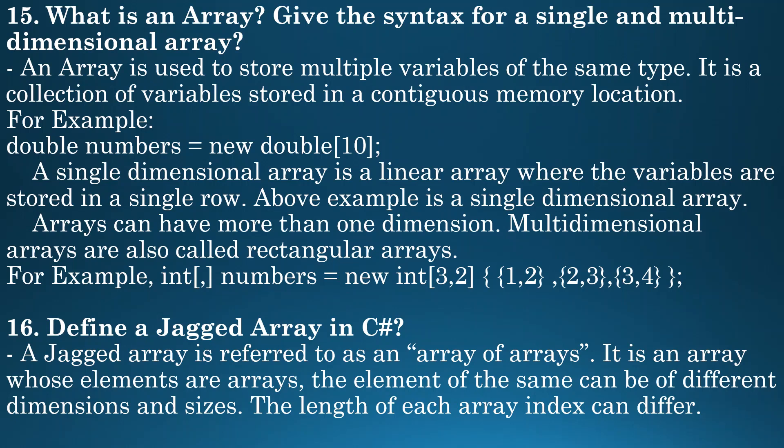Next question: what is an array? Give the syntax for a single and multidimensional array. An array is used to store multiple variables at the same time — it is a collection of variables stored in a contiguous memory location. For example, you are creating a numbers array of data type double using the new keyword, specifying the size in square brackets. A single dimensional array is a linear array where variables are stored in a single row.